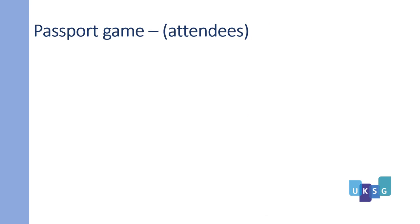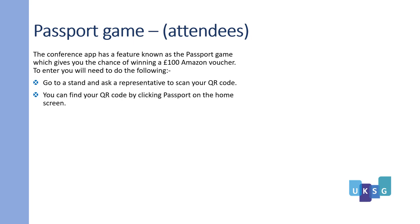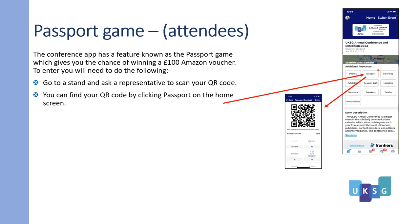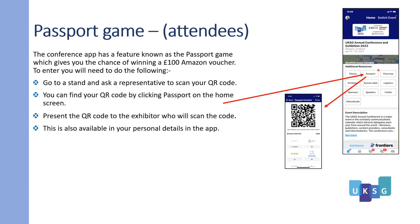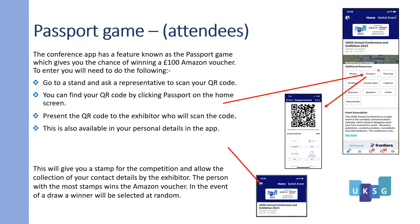The passport game from the attendee's perspective. The conference app has a feature known as the passport game which gives you a chance of winning £100 worth of Amazon vouchers. To enter, go to a stand and ask a representative to scan your QR code. You can find the QR code by pressing 'passport' on the home screen — present it to the exhibitor who will scan the code. This code is also available in your personal details in the app. This will give you a stamp for the competition and allow the collection of your contact details by the exhibitor. The person with the most stamps wins the Amazon voucher; in the event of a draw, a winner will be selected at random.